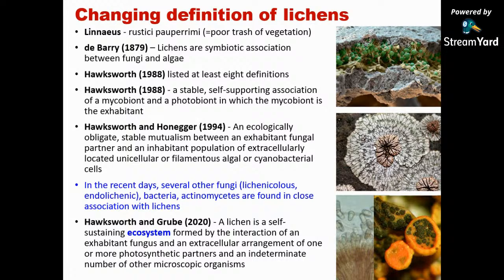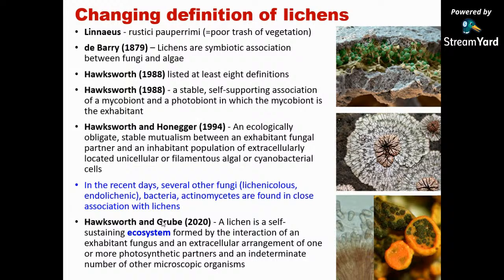From the time lichens were first studied, from Linnaeus's period to today, there are several definitions. The latest one says a lichen is a self-sustaining ecosystem formed by the interaction of an exhabitant fungus in an extracellular arrangement with one or more photosynthetic partners and an indeterminate number of other microscopic organisms. We identify lichens based on fungal characters; the name given to the lichen is the fungal name. We call them lichenized fungi.